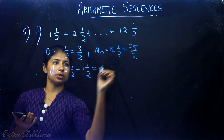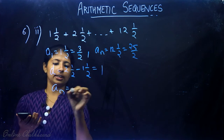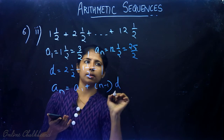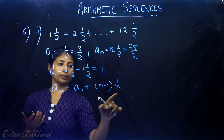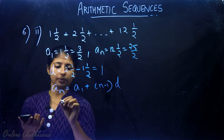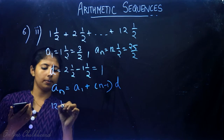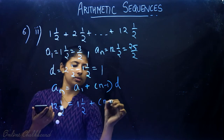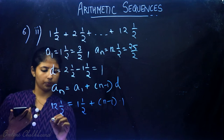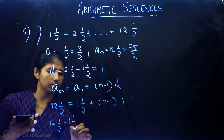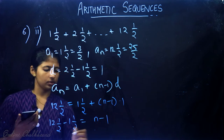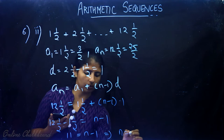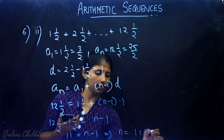Using the nth term formula: 25/2 minus 3/2 equals n minus 1, which gives 11 equals n minus 1, so n equals 12. We have 12 terms.